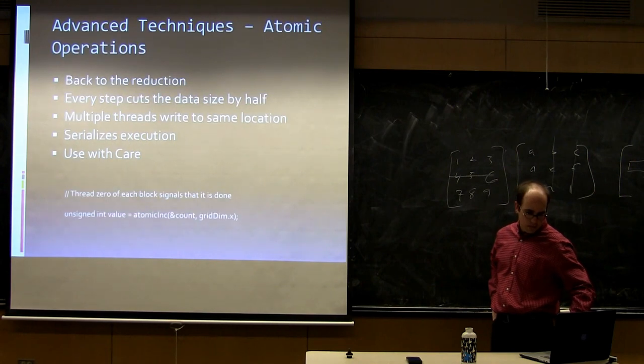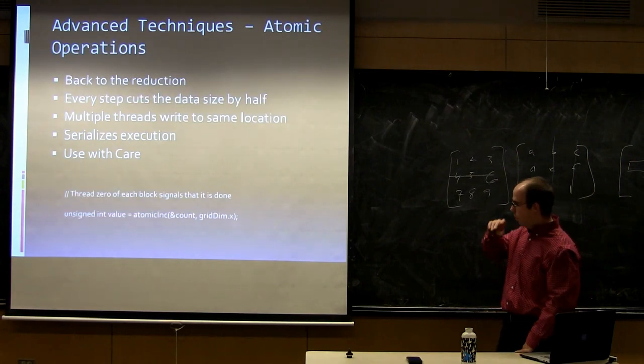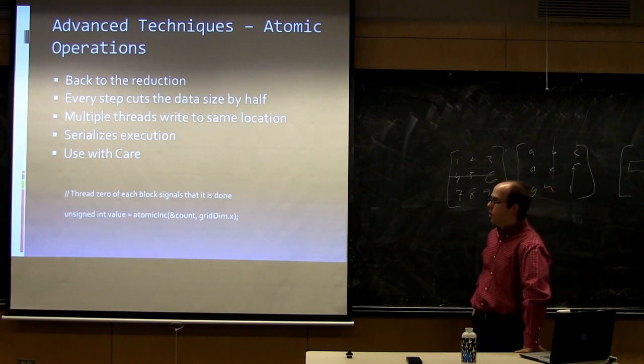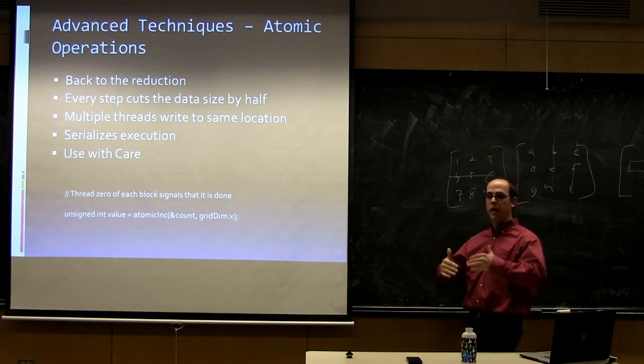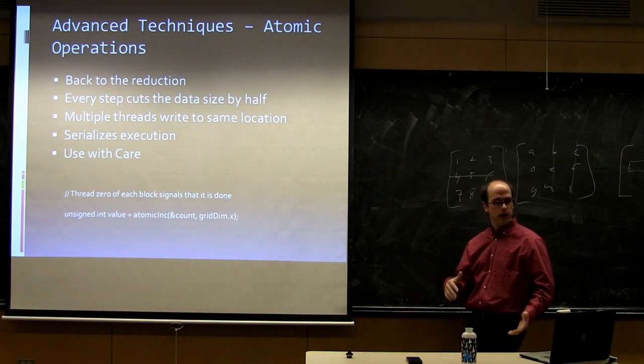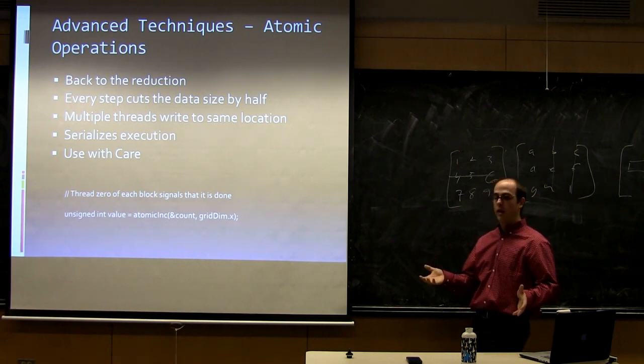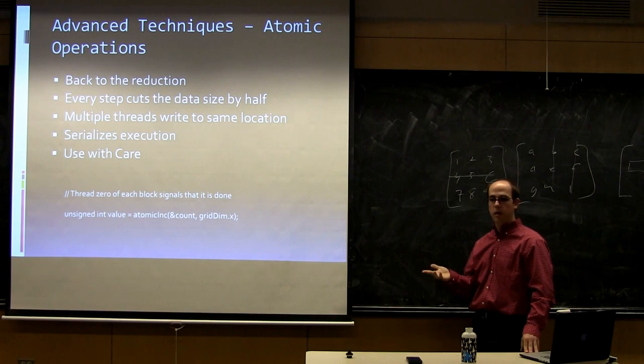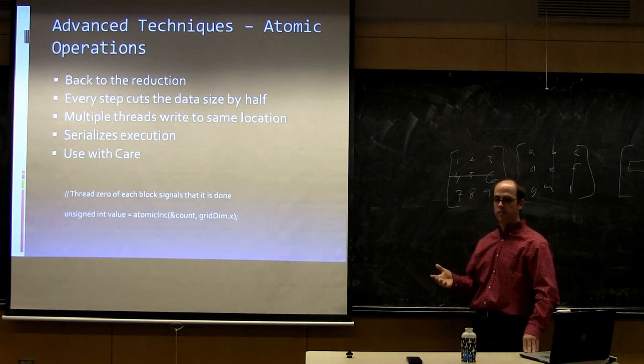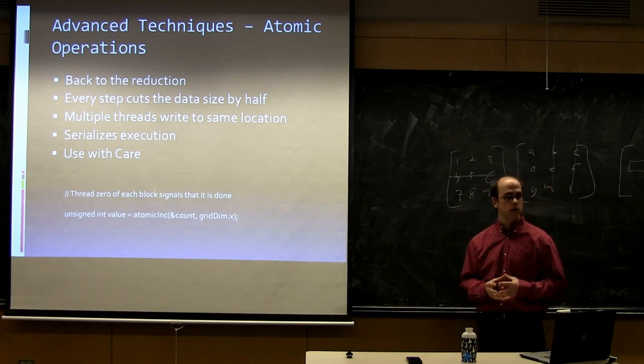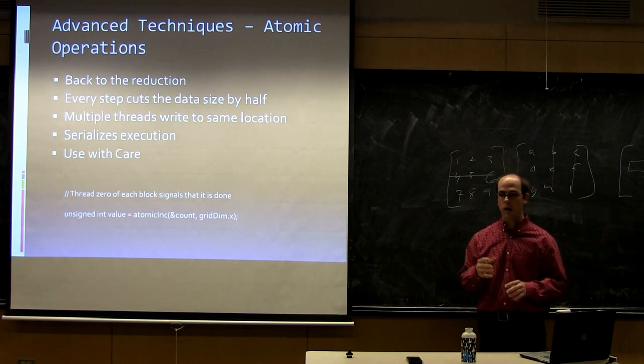The first thing I haven't talked about at all is that I always say a thread writes to a specific place based on some index. Well, a lot of times when you're doing a sum or when you're doing something, you may want threads to increment a counter. Maybe you want to count the number of ones in your data or count the number of failures or whatever. Typically those counters live in a single place. So how do all threads in a block update the same place?